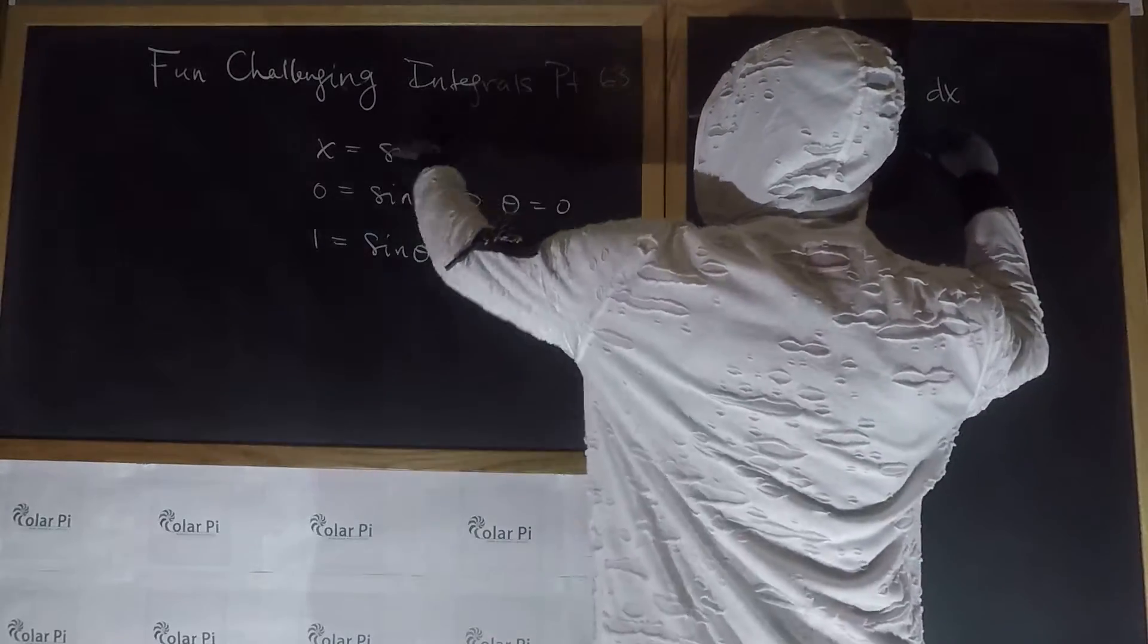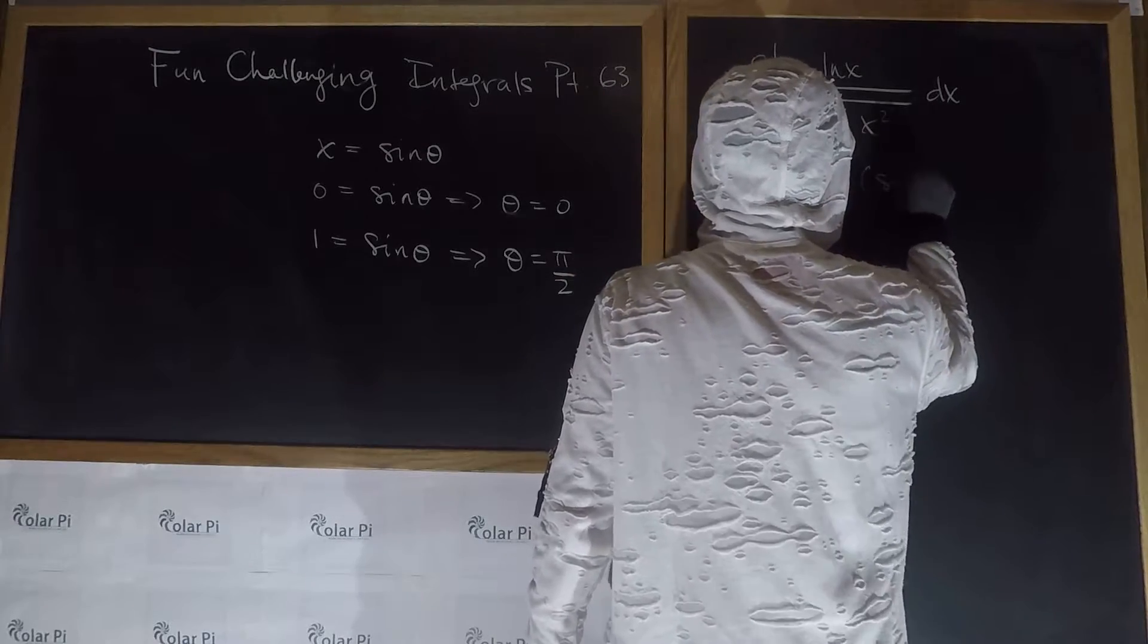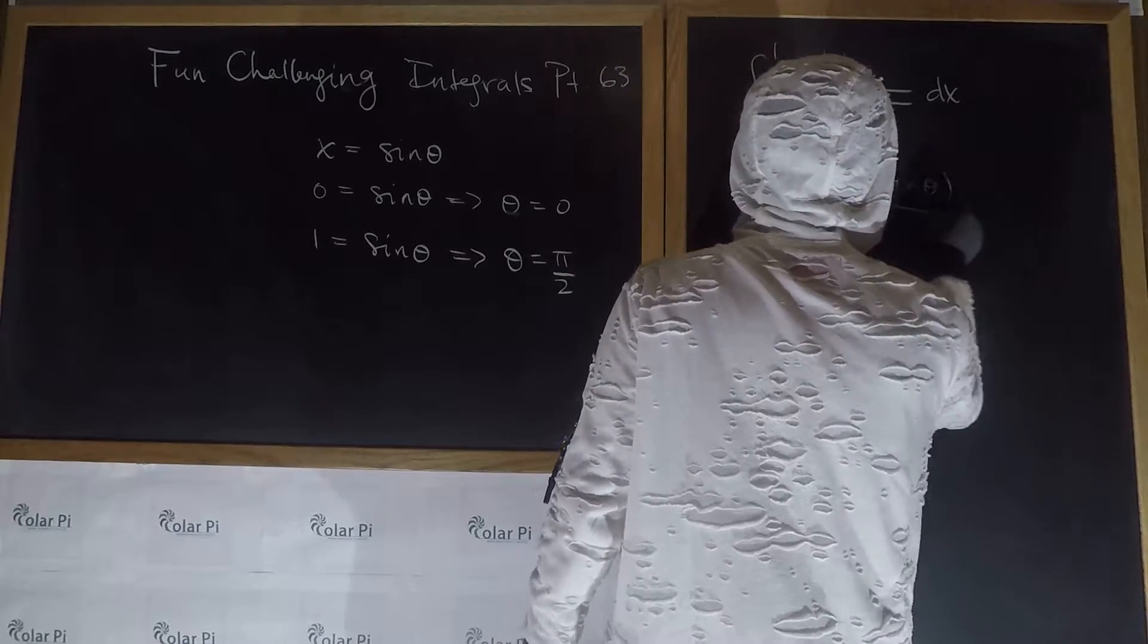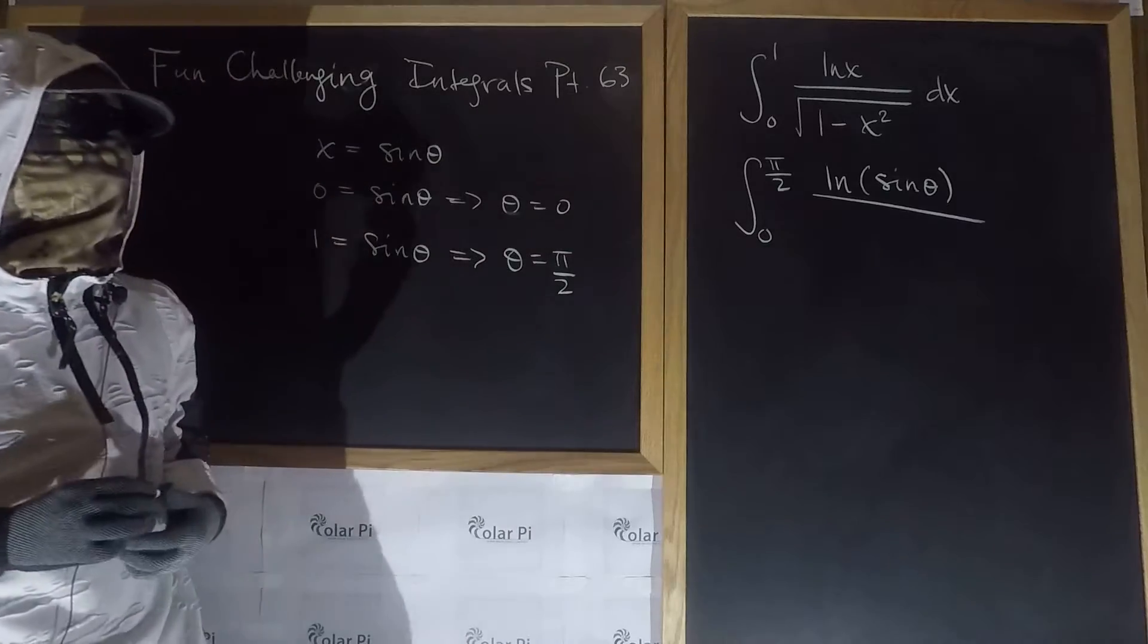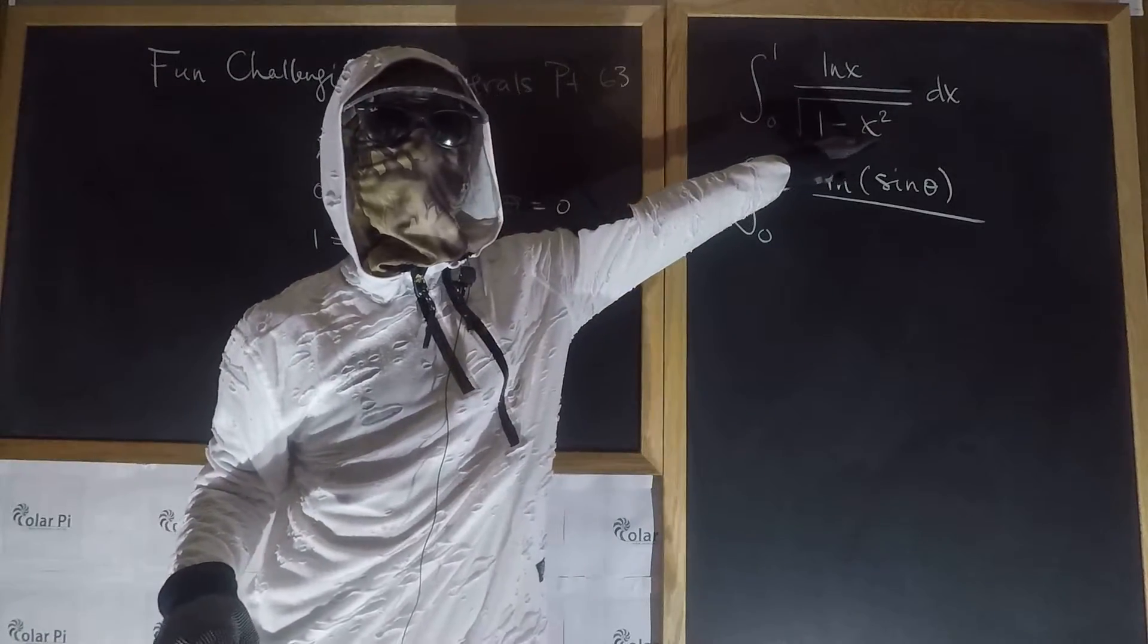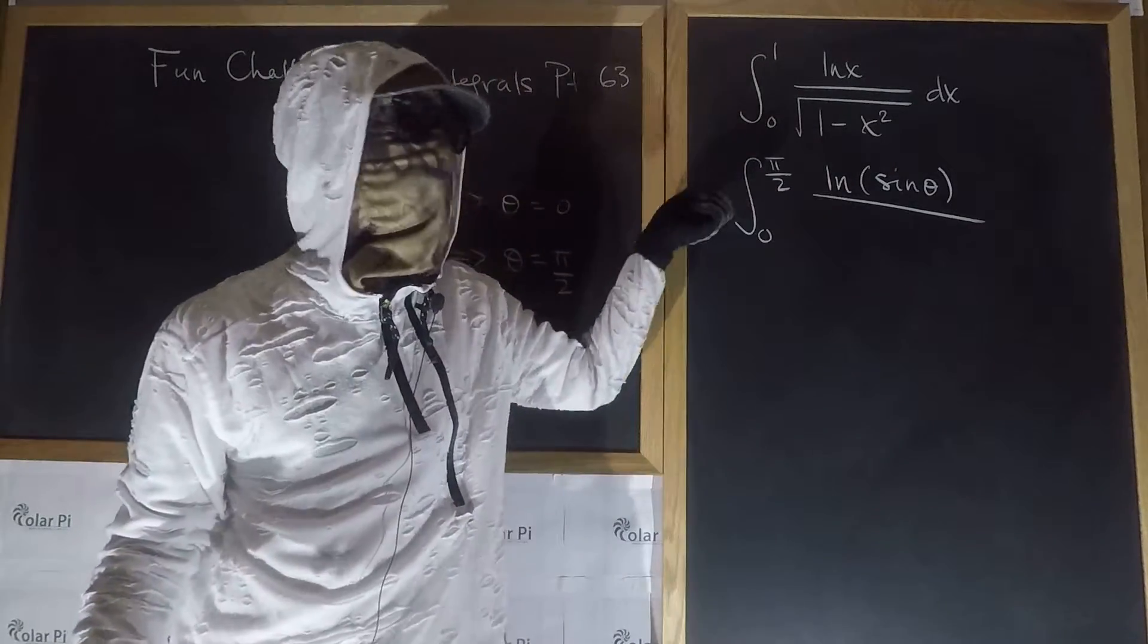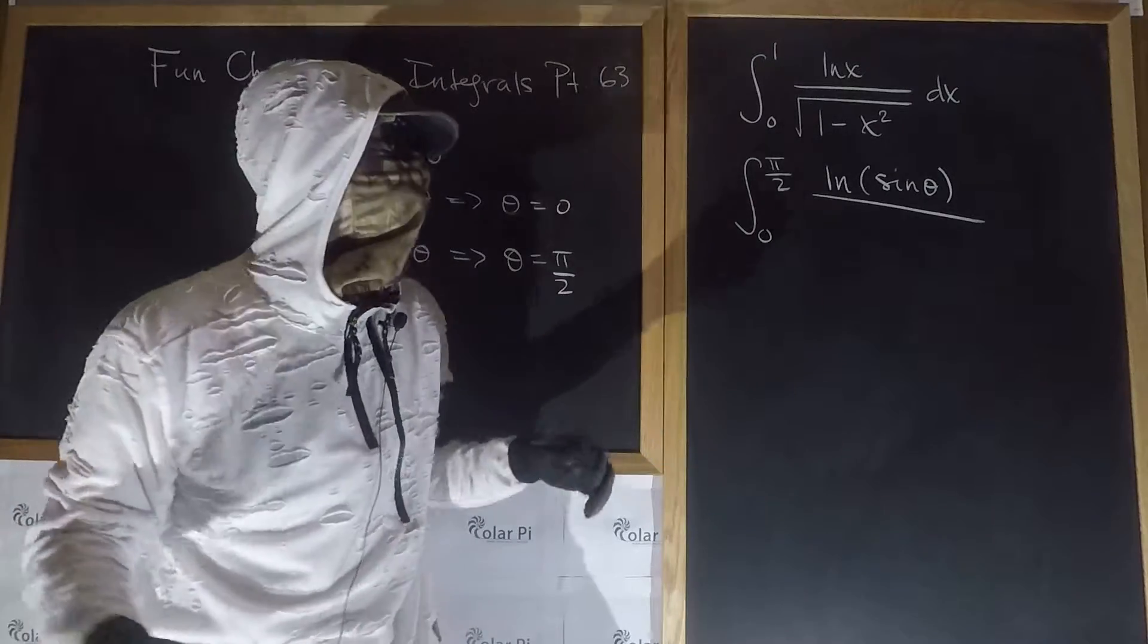And then, since x is sine theta, the numerator becomes the natural log of sine theta divided by, and the denominator is going to be the square root of one minus sine squared. We know that one minus sine squared theta is cosine squared theta, and the square root of that is just cosine theta.